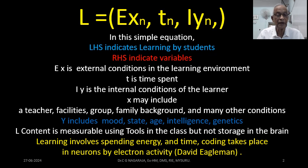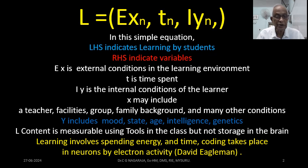I refers to the internal factors of the learner or the child — that is Y-N, and it may be any number of factors. Internal factors include things like the mood of the child, state of learning, age of the child, intelligence, genetic background, and even hunger or the food the child has taken. This also includes eyesight, hearing capacity, and the brain itself.